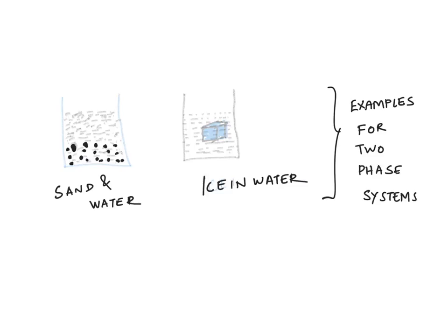Having said what is a phase, now let's look at two examples of two-phase systems, two very day-to-day real life examples. In the first example you can see sand and water.